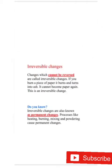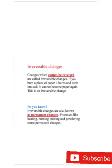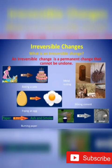The next one: irreversible changes. Changes which cannot be reversed are called irreversible changes. For example, if you burn a piece of paper, it burns and turns into ash — it cannot become paper again. So this is an example of irreversible changes. Irreversible changes are also known as permanent changes.